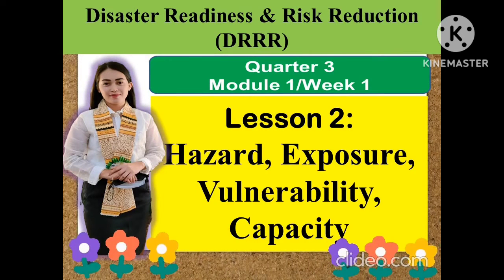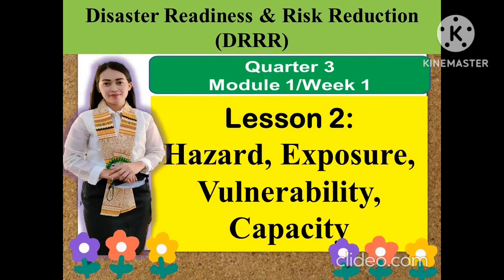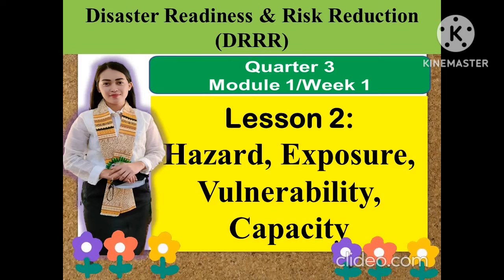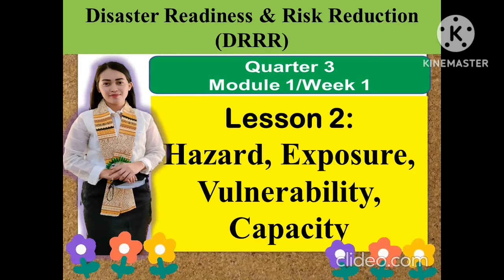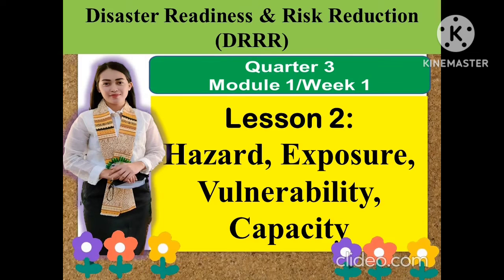Our topic for Disaster Readiness and Risk Reduction, Lesson Number Two, is hazard, exposure, vulnerability, and capacity. This will be the topic for Quarter Three, Module Number One.